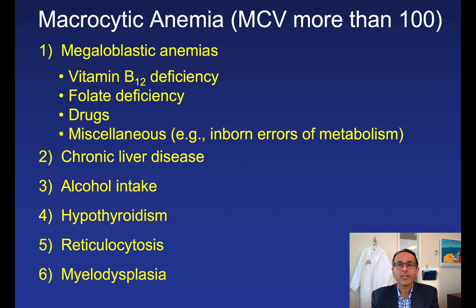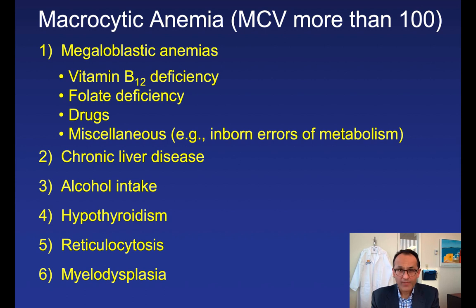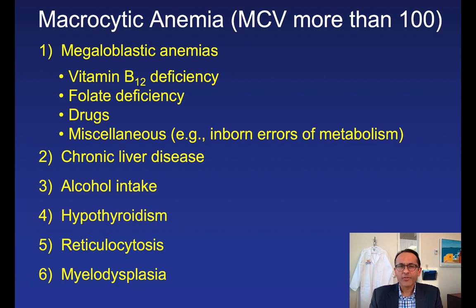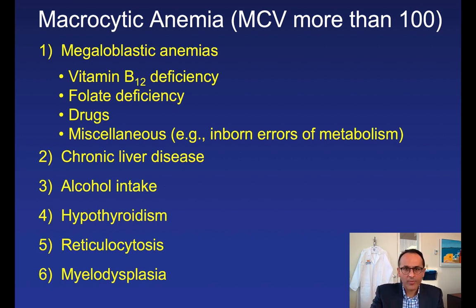Other causes of macrocytic anemia include chronic liver disease, alcohol intake, hypothyroidism, reticulocytosis — because reticulocytes are large — and myelodysplasia. Myelodysplasia is a pre-leukemia occurring in elderly patients that can predispose to frequent infections. On neutrophils you may see the Pelger-Hewitt or pseudo-Pelger-Hewitt abnormality. Patients may also have other CBC abnormalities such as thrombocytopenia, and a bone marrow biopsy is needed to confirm the diagnosis.